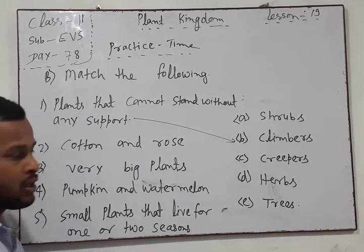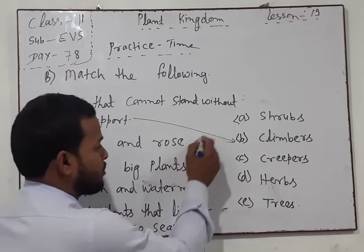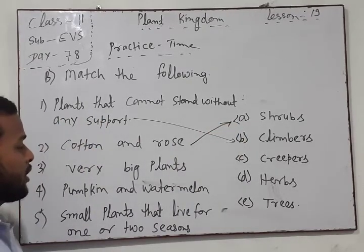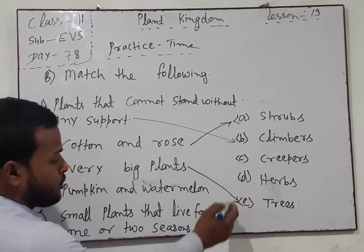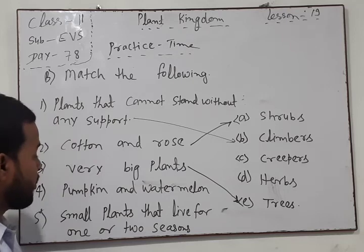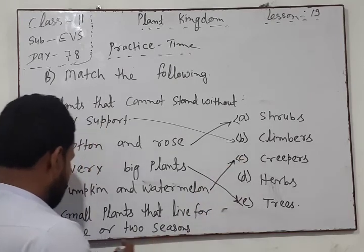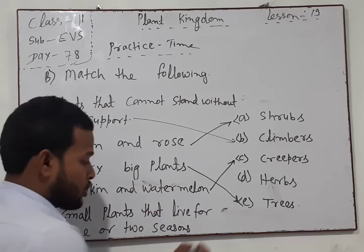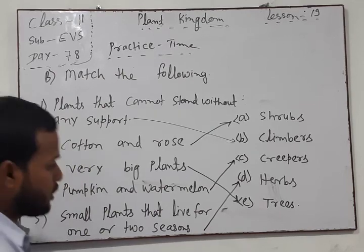The correct answers: cotton matches with shrubs; very big plants match with trees. Next, pumpkin and watermelon match with creepers. Small plants that live for one or two seasons are herbs. This completes the matching exercise.